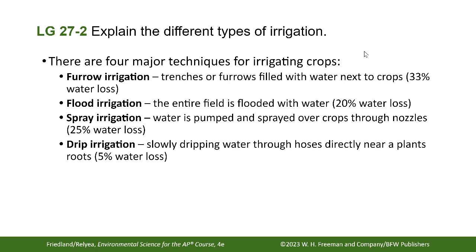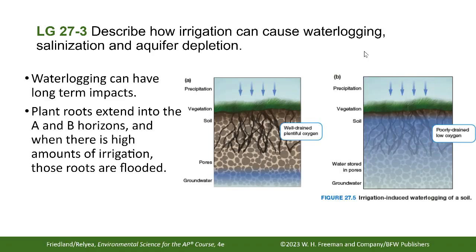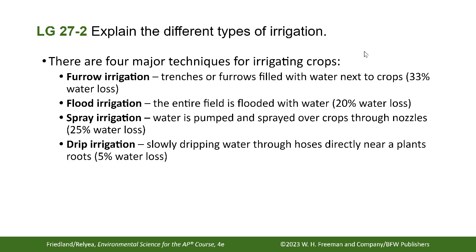Spray irrigation pumps water and sprays it over crops through nozzles — like the big rotating arms you can see on the turf or sod farm along Highway 63 to Columbia. They spray water just like a sprinkler in your yard. Drip irrigation slowly drips water through hoses directly near the plants' roots. It's the most efficient in terms of water loss, but it's not the most commonly used — likely because it provides too little water at a time to cover large crop operations.